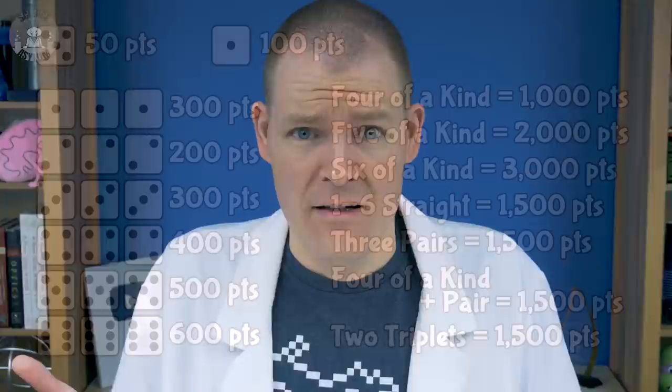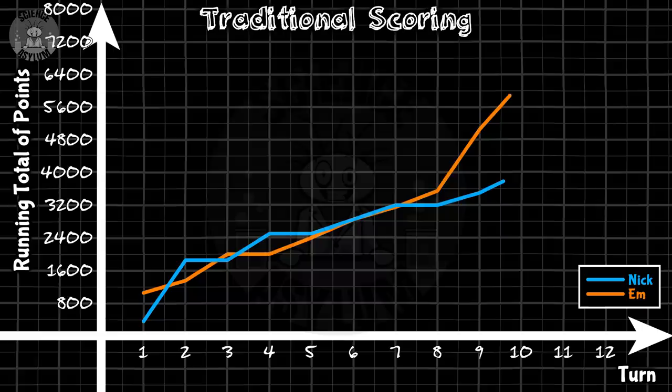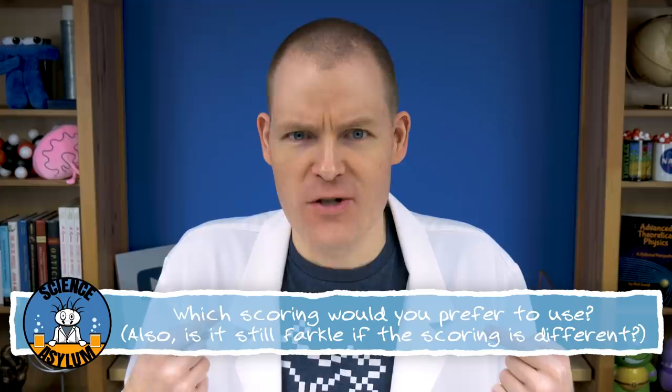So, as it turns out, Farkle already has good scoring rules, even if they're not statistically accurate. Honestly, it already has good scoring BECAUSE it's not statistically accurate. So, which scoring would you like to use? Mine or the traditional? Also, is it still Farkle if we use different scoring? Discuss.